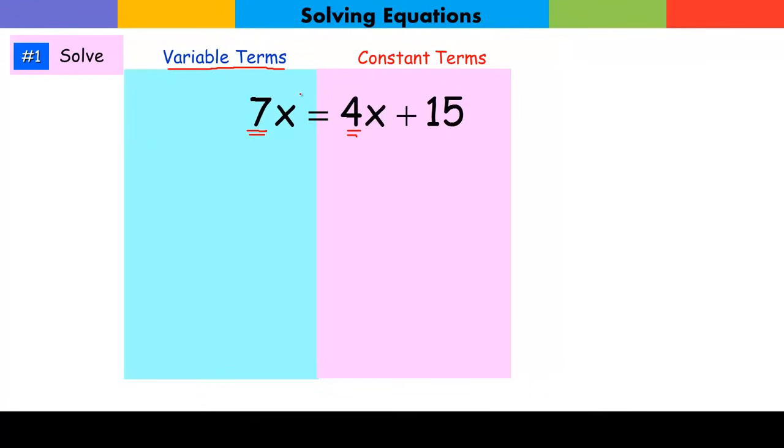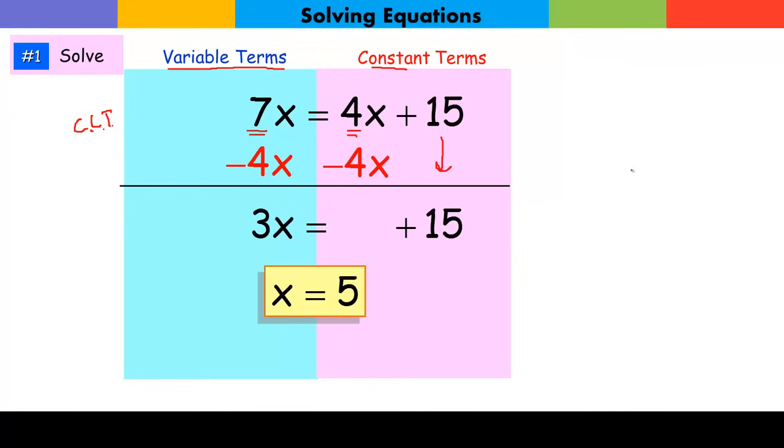As soon as you pick your side, now I want to get the variable term off the constant side. I'm going to subtract 4x from this side, and of course subtract it from this side. These are like terms, so we collected all the x's on this side by combining like terms. That's the CLT: we both collect and combine like terms. This 15 just goes along for the ride. Now I have just a variable term on this side, a constant term on this side. Now I'm ready to solve, which just means dividing both sides by 3. We have x equals 5.